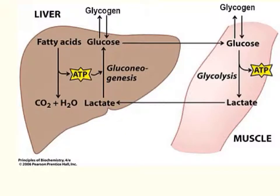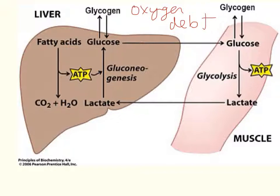That's what happens when you have something called oxygen debt. Oxygen debt diverts pyruvate from the tricarboxylic acid cycle, otherwise known as the Krebs cycle, and sends it to the lactic acid pathway.